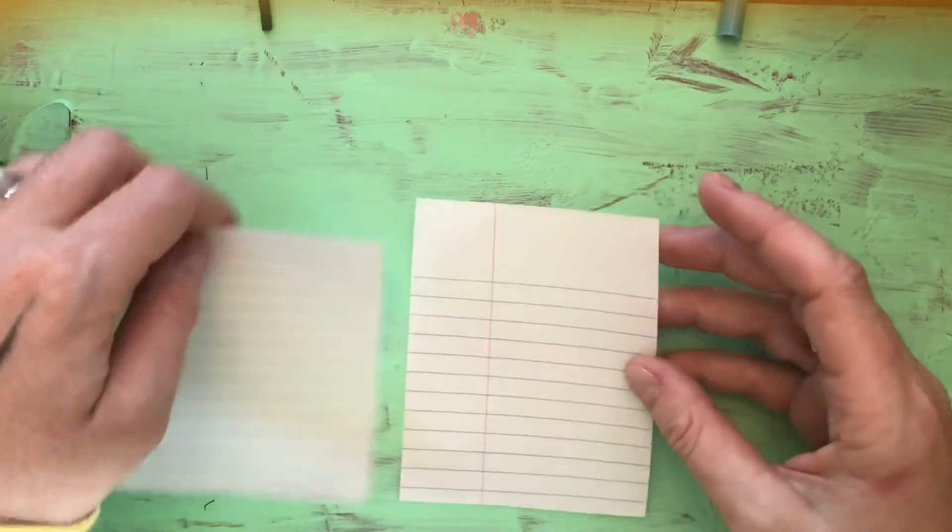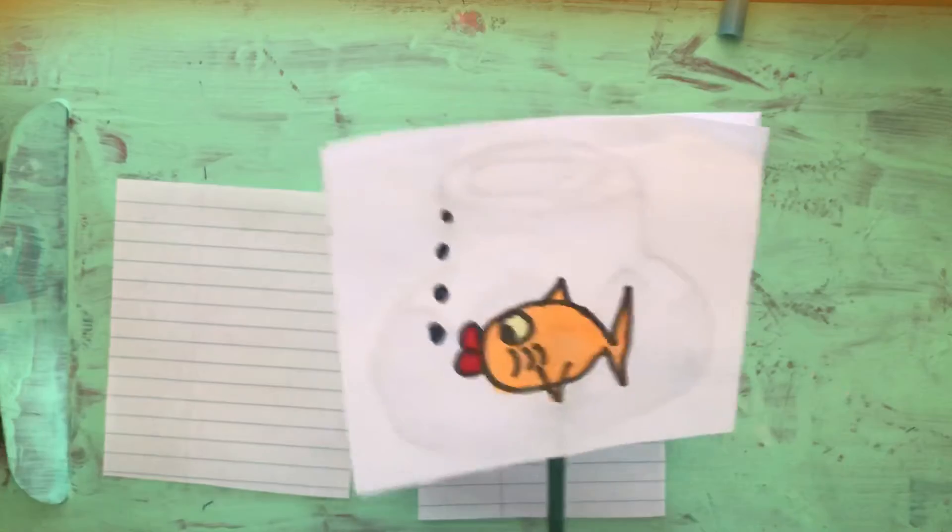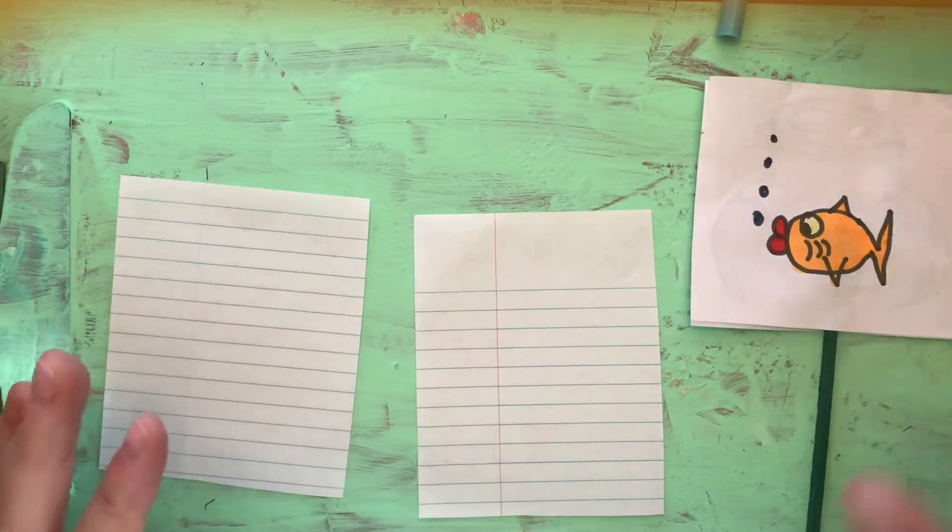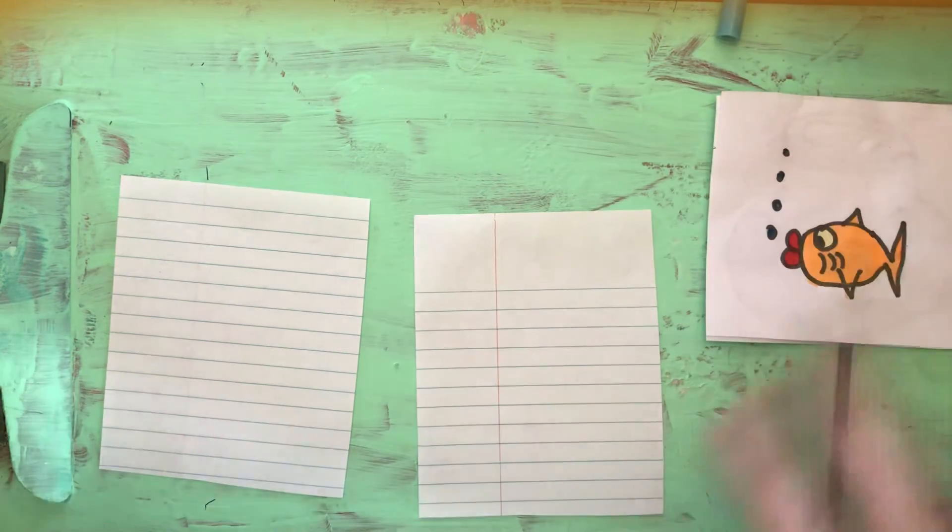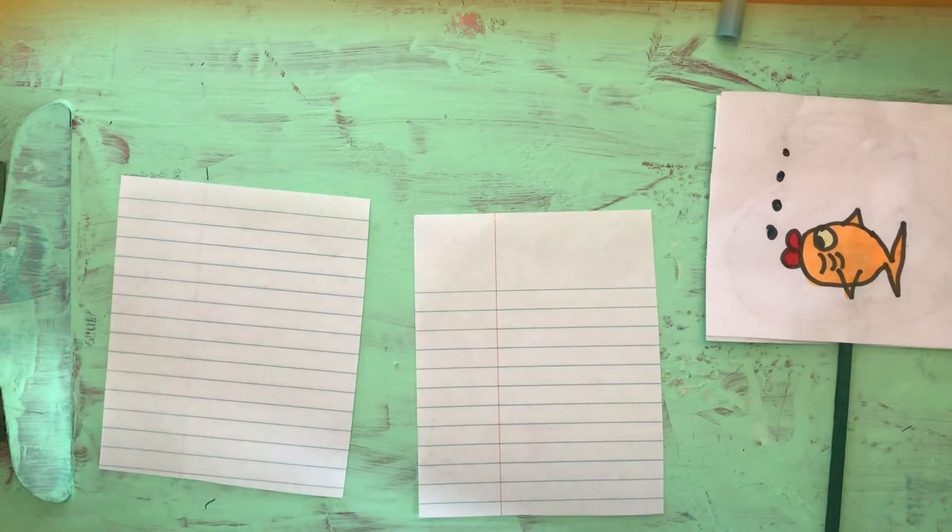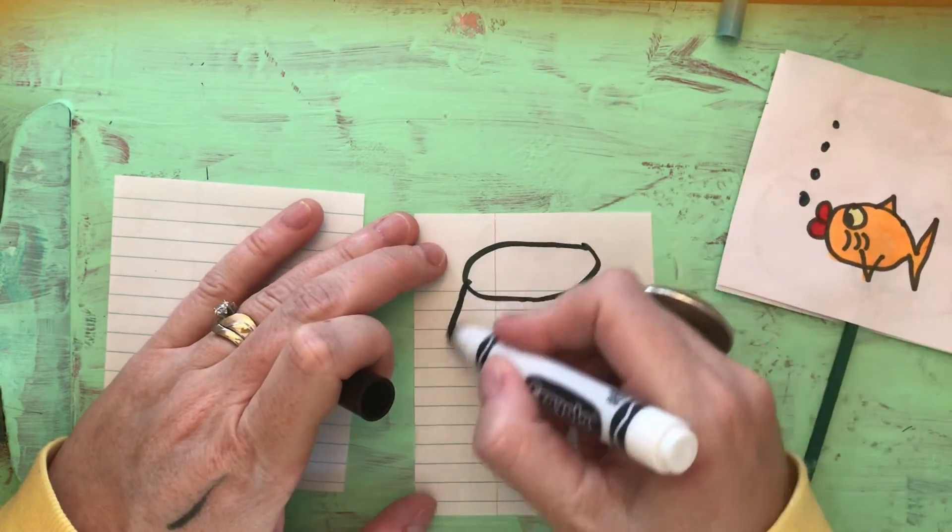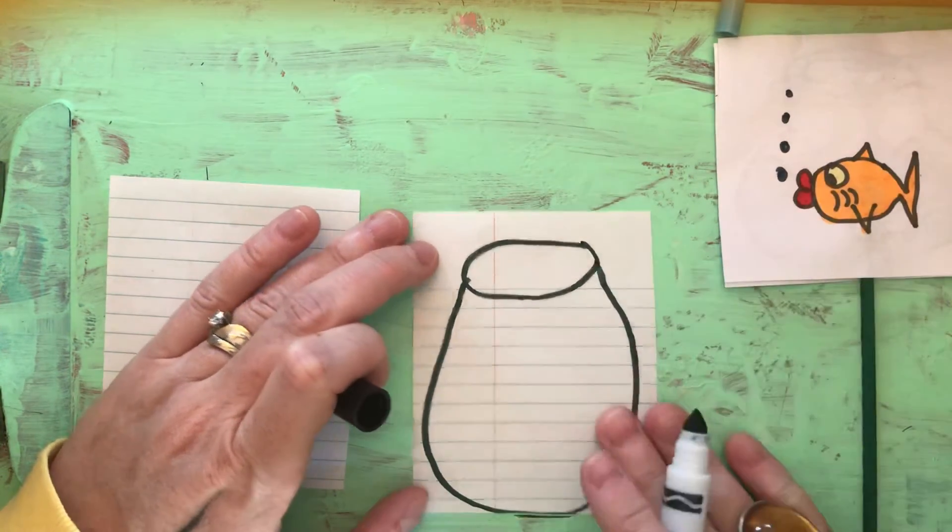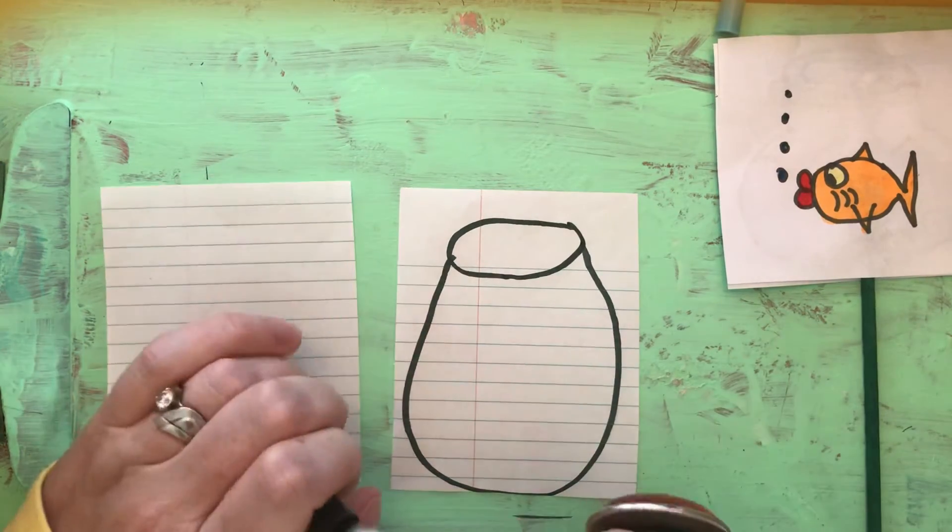The key to a thaumatrope is really just creating two images. If you have your whole image of a fish in a fishbowl, on one side you need to draw the bowl. This is the setting, this is where the action takes place. Any kind of bowl will do.